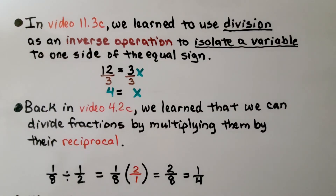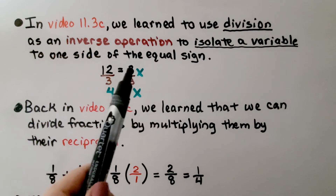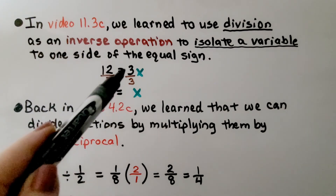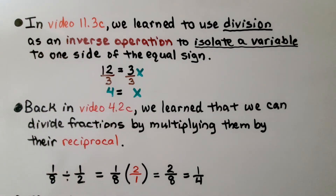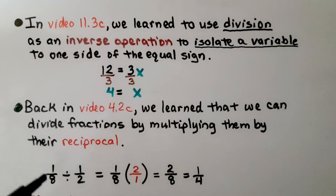As mentioned in video 11.3c, we use division as an inverse operation to isolate a variable to one side of the equal sign. For example, if 12 = 3x, we divide both sides by the coefficient 3: 12 ÷ 3 = 4, giving us 1x, so x = 4. And going back to video 4.2c, we learned that dividing fractions means multiplying by the reciprocal — the upside-down version. For example, the reciprocal of 1/2 is 2/1.